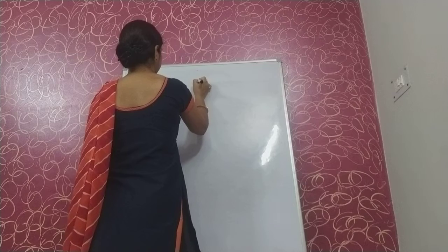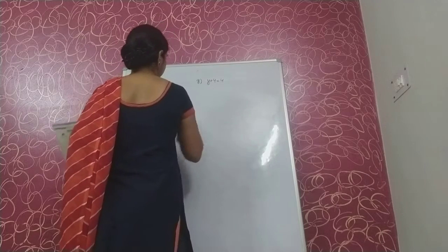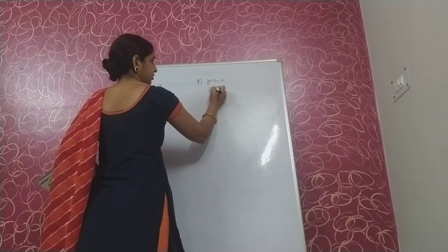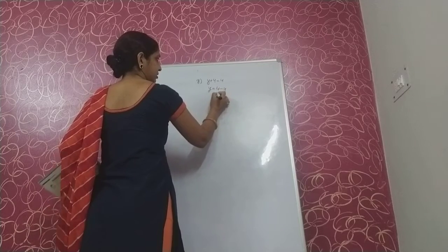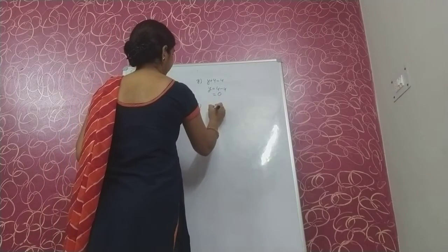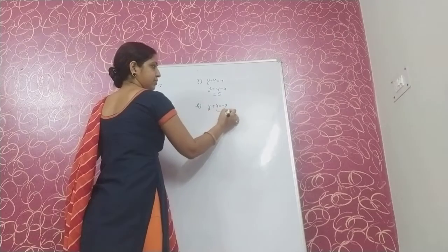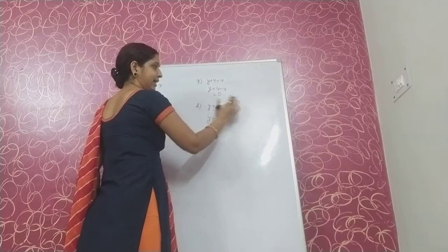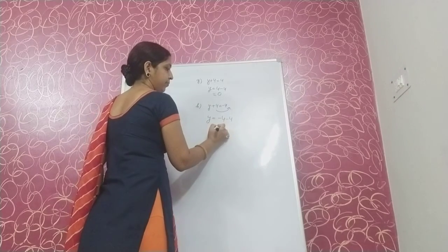Next, y plus 4 is equal to 4. Transpose this plus 4 to the right side where it becomes minus 4. So 4 minus 4 is 0. Next, y plus 4 is equal to minus 4. Transpose this plus 4 to the right side. We have already minus 4, and this 4 also becomes minus 4. So minus 4 and minus 4 is minus 8.